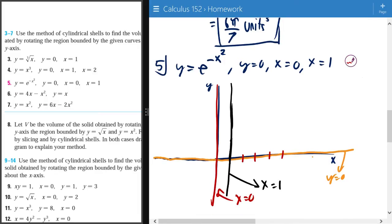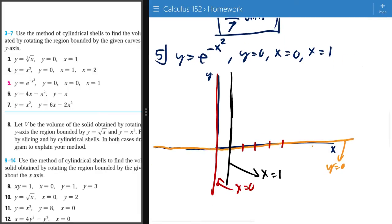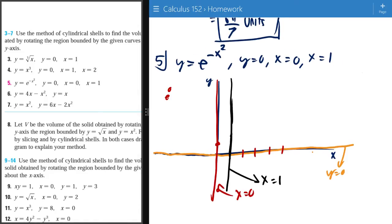And finally I will graph the y equals e to the power of negative x squared. Let's see what it would be at zero. So zero is just going to be e to the power of zero, which is just one, so it is going to be a point here.